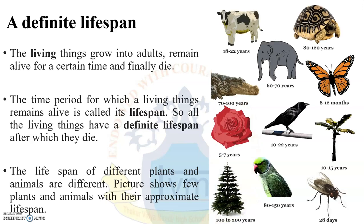The picture shows a few plants and animals with their approximate life spans. For example, an elephant lives 60 to 70 years, a tortoise 80 to 120 years, a butterfly 8 to 12 months, a crow 10 to 22 years, a crocodile around 70 to 200 years, trees 100 to 200 years, and a fly approximately 28 days.